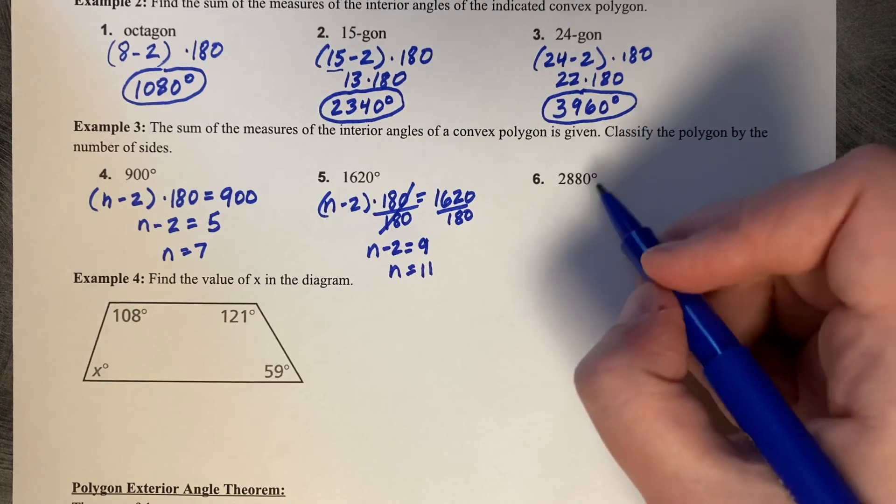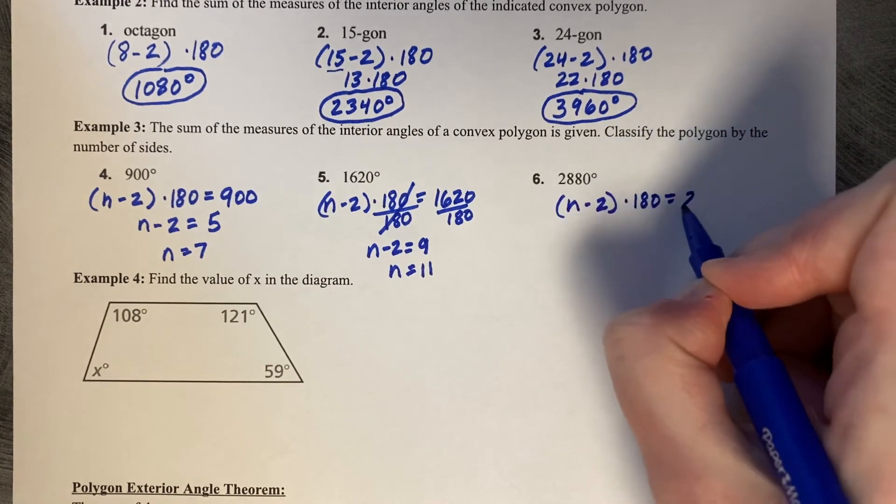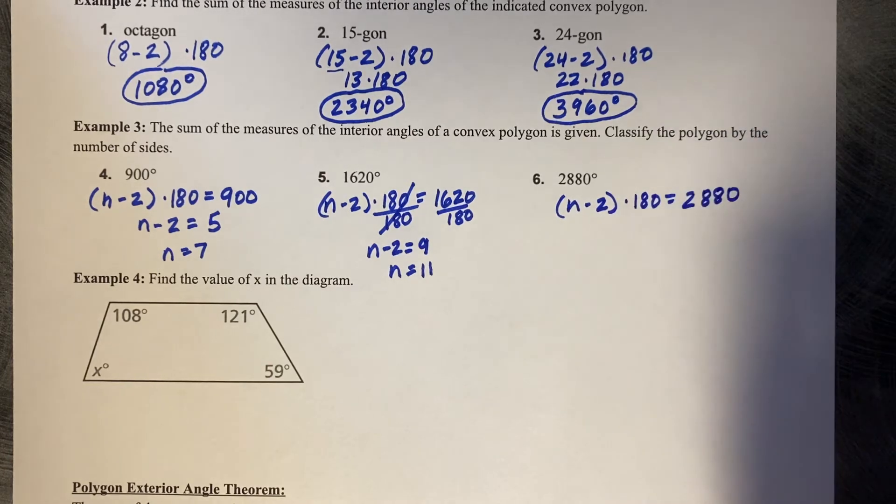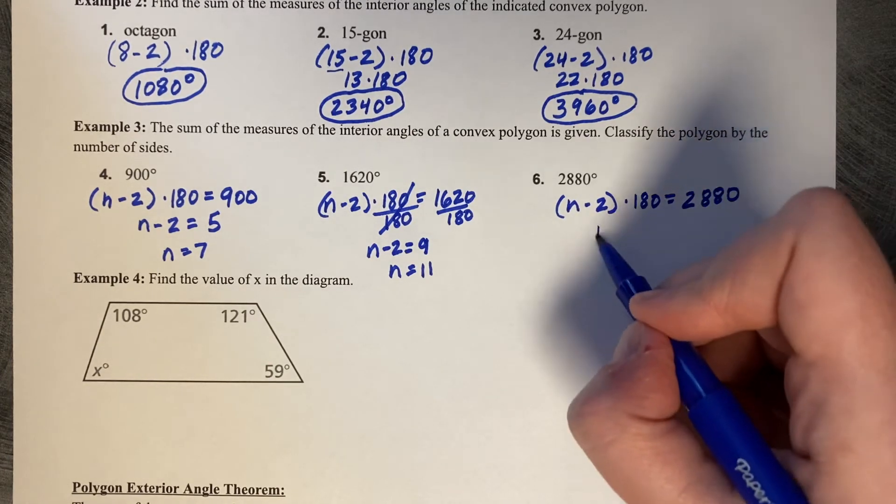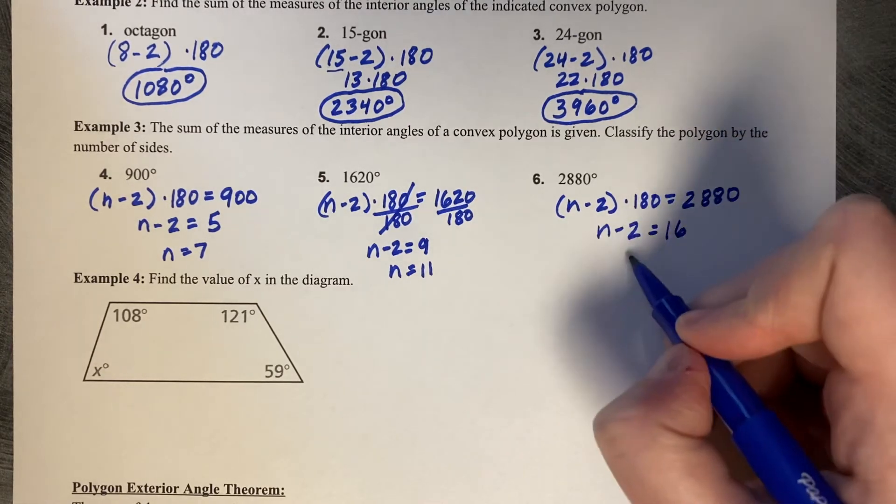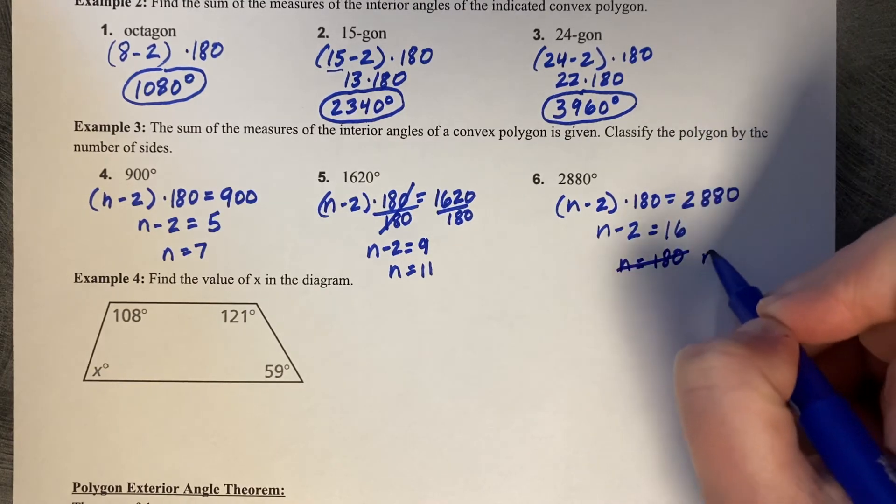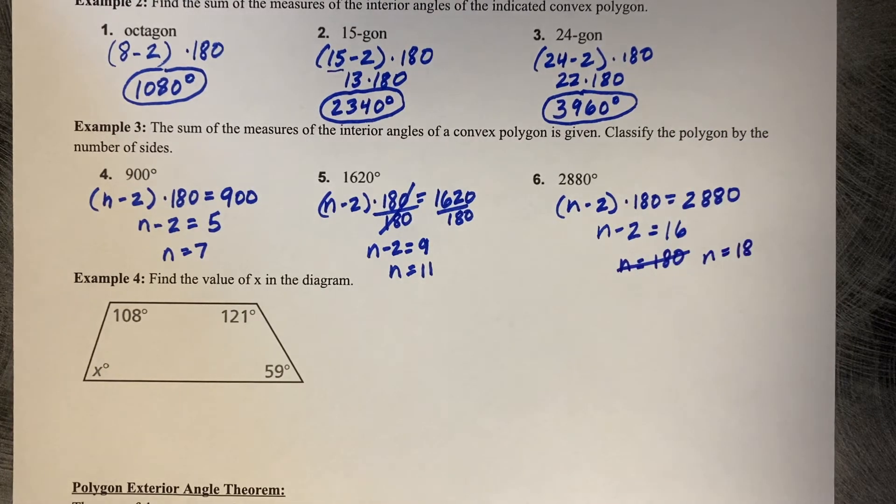2,880. n minus two times 180 equals 2,880. Divided by 180, n minus two equals 16. Plus two, n equals 18. An 18 gon.